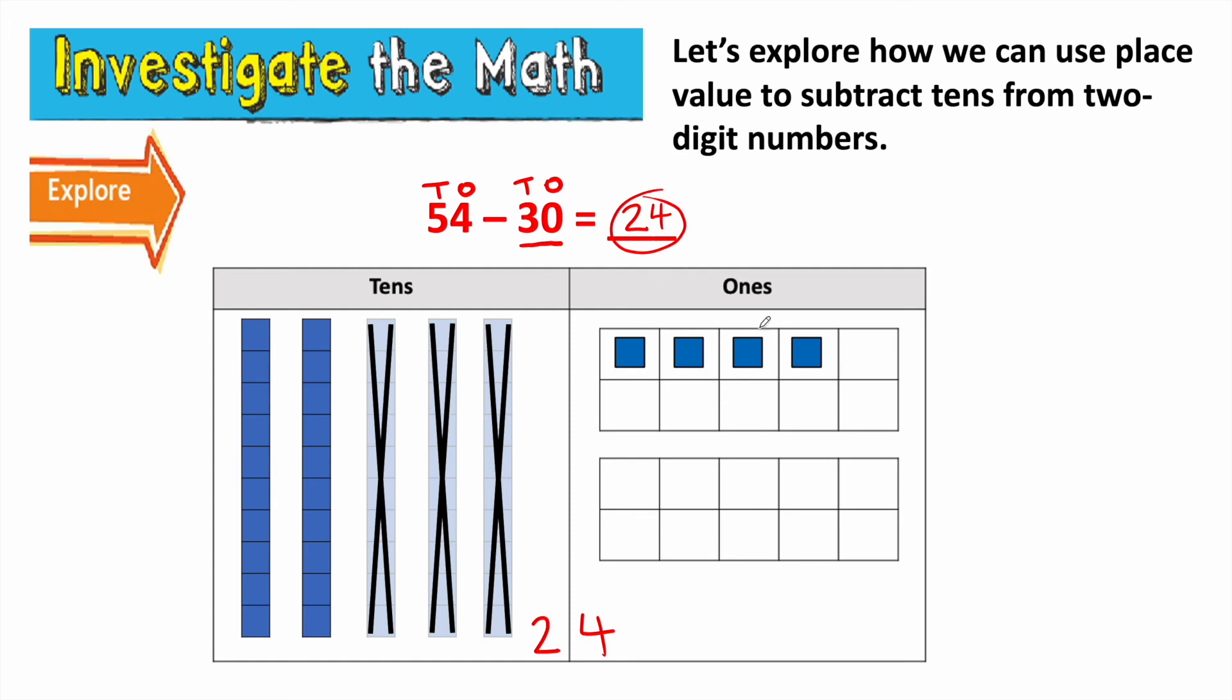That's two different ways that I could subtract tens from a two-digit number. First way is I can count back. Second way is I can take tens from tens. Just like we did yesterday. There were five tens. I took away three tens. There are two tens left.